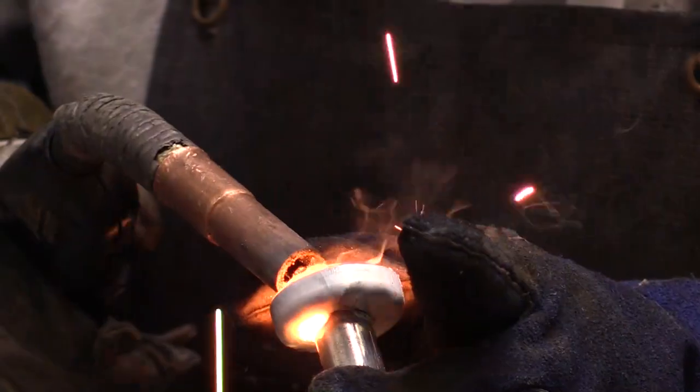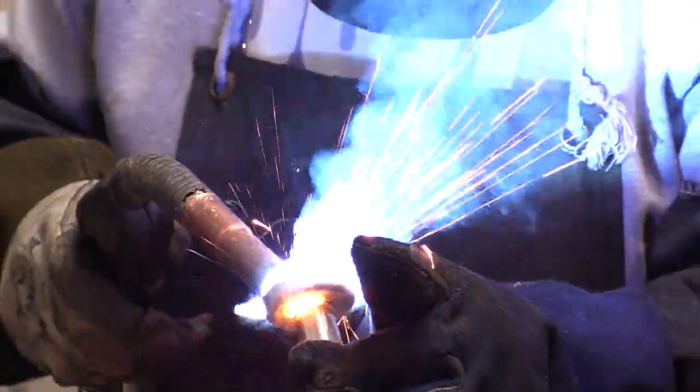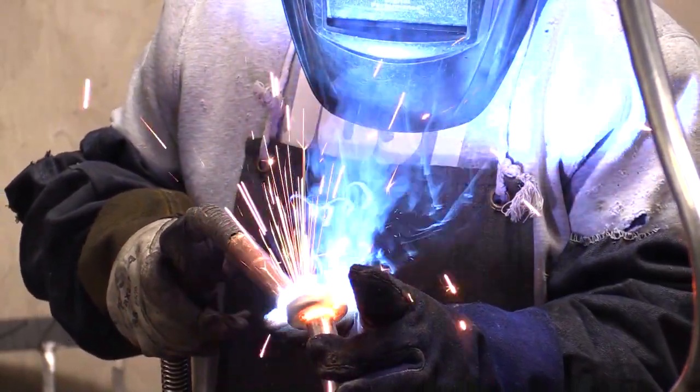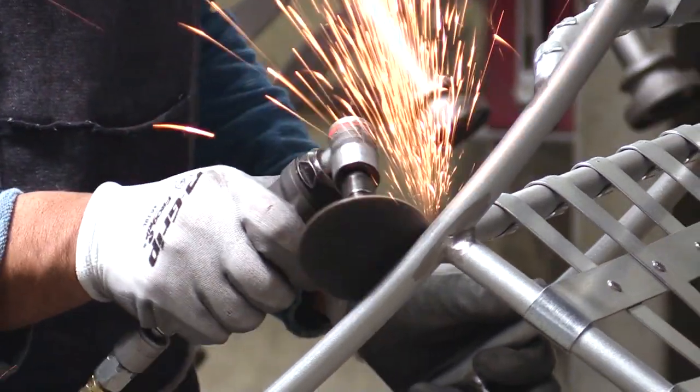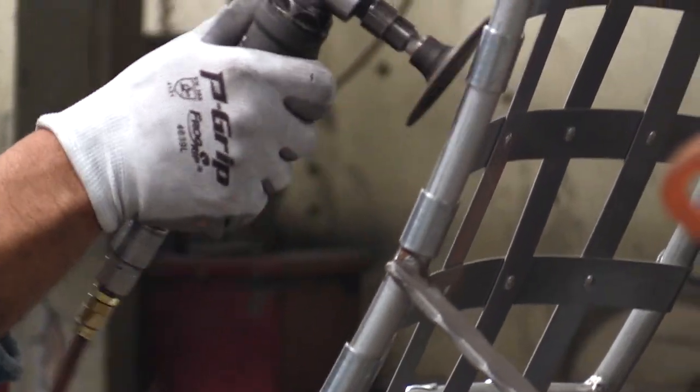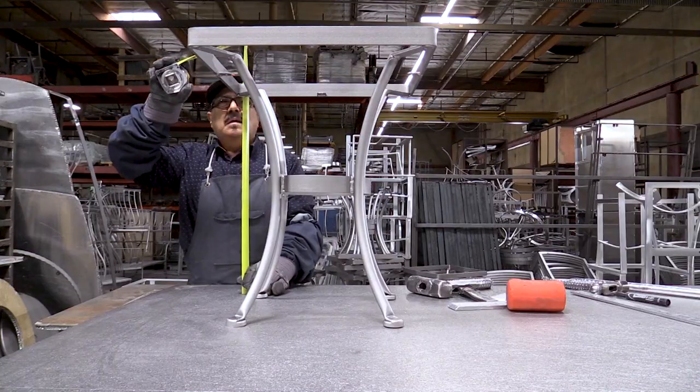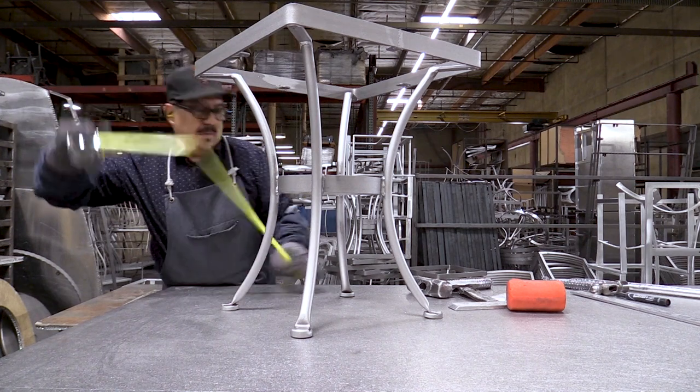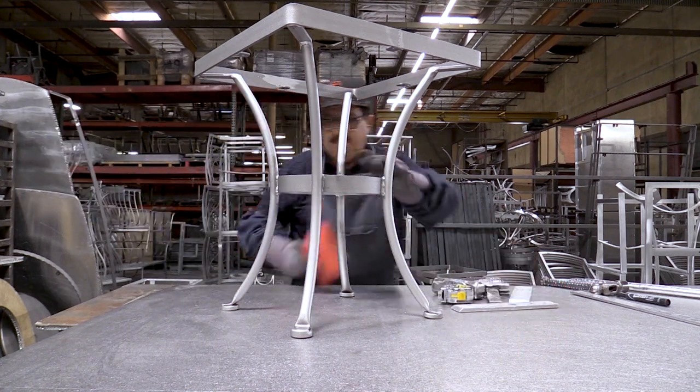This eliminates the possibility of moisture entering the interior of tubing or a crevice, a process that guards against rust and corrosion. All welds are then ground and sanded to create a seamless transition from one component to another. Each piece is measured and adjusted on a truing table to verify balance and ensure it stands flat on all legs.